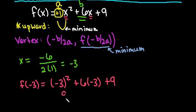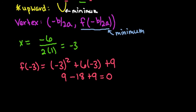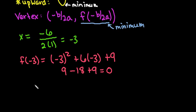If we simplify this, negative 3 squared gives us 9, and because I have a positive 6 and a negative 3, this would give me negative 18, and we end up with 0. So our minimum point occurs when x is negative 3 at 0.